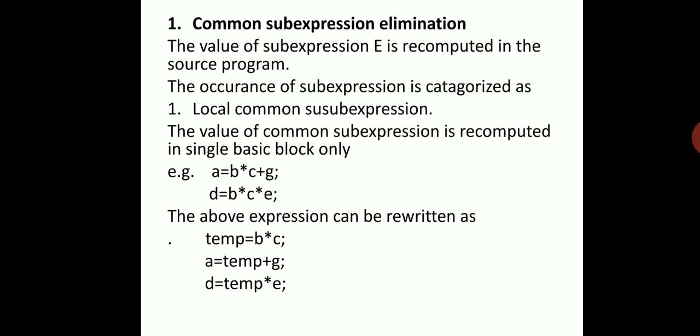If E is a common sub-expression and we recalculate its value again and again in the program, it will increase the cost of program execution. The value of sub-expression E is recomputed in the source program. We must first identify common sub-expressions; if that value is calculated once, there is no need to recalculate it again. The occurrence of a sub-expression is categorized as either local common sub-expression or global common sub-expression.